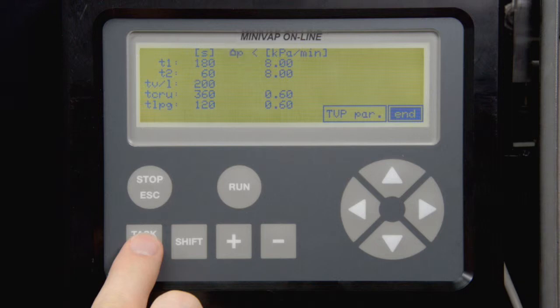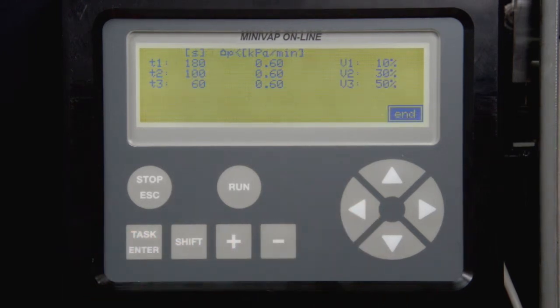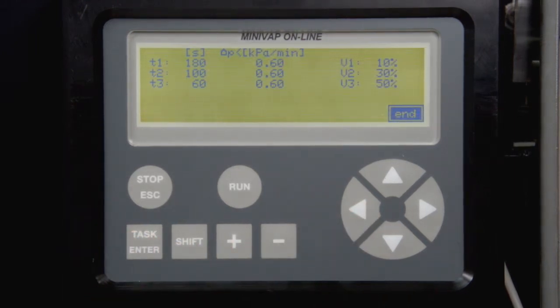To change the settings for TVP measurement, go to TVP Par and press Task. Here, equilibrium times and measuring points for TVP measurement can be adjusted. The TVP measurement will test three different V over L and extrapolate to a V over L ratio of zero. This method has been verified on a huge sample set of crude oils.